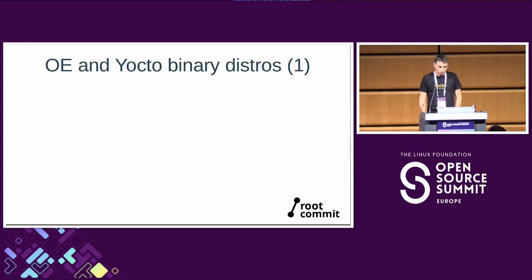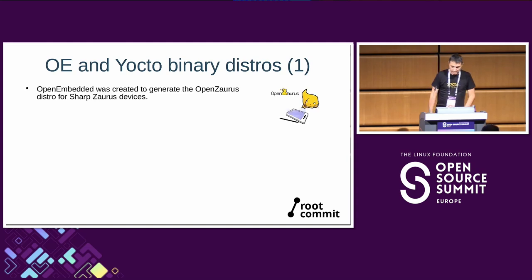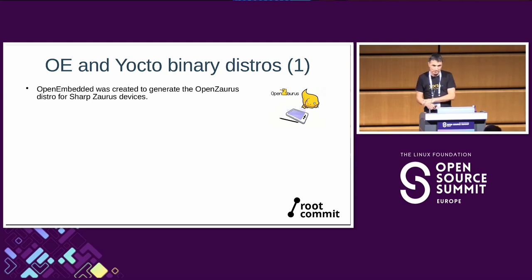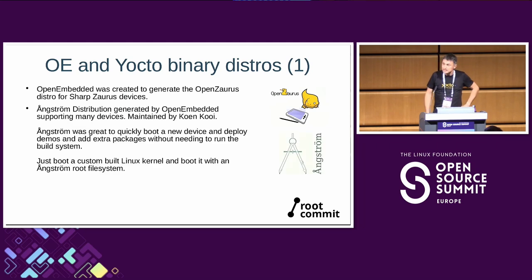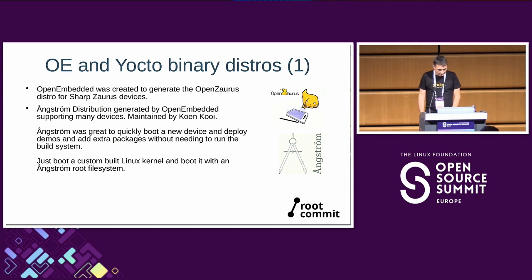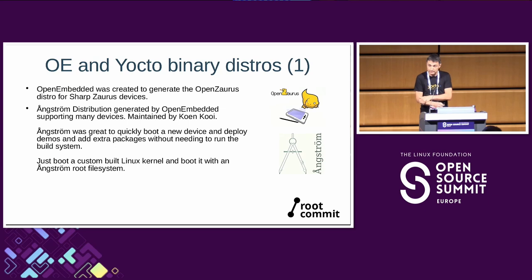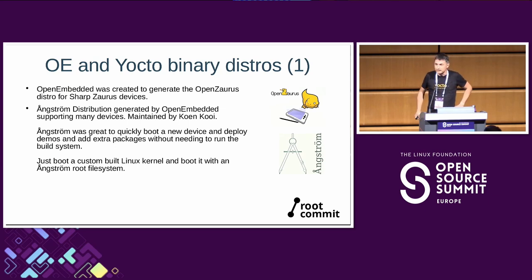OpenEmbedded was created to support the OpenZaurus distro for Sharp Zaurus devices — that's the initial goal of the project. Then there was the famous Angstrom distribution that Koen Kooi was maintaining, which was really convenient: you'd fetch an image from Angstrom, boot it on your device with a custom-built kernel, and then add additional packages depending on what you wanted for your demo.